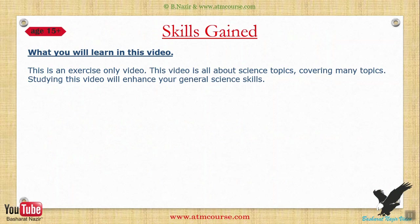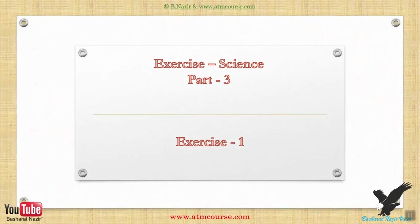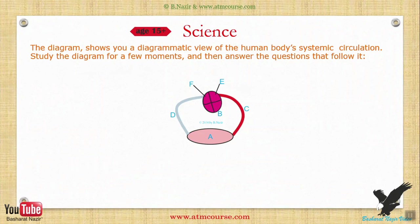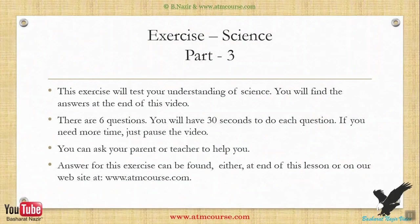The diagram shows a diagrammatic view of the human body's systemic circulation. Study the diagram for a few moments and then answer the questions that follow. This exercise will test your understanding of science. You will find the answers at the end of this video. There are 6 questions. You will have 30 seconds to do each question.